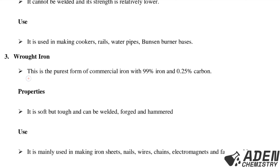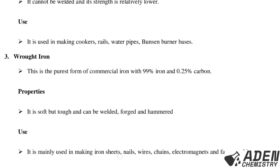Third, wrought iron: this is the purest form of commercial iron, with 99% iron and 0.25% carbon. Properties: it is soft but tough and can be welded, forged, and hammered. Uses: mainly used in making iron sheets, iron nails, wires, chains, electromagnets, and farm machinery.